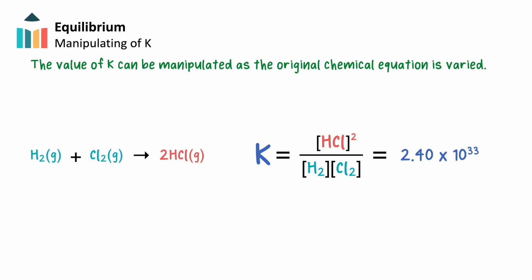Once the equilibrium constant value is known for a particular reaction at a particular temperature, the value of K can be manipulated as the original chemical equation is varied. For example, at 25 degrees Celsius, the production of hydrogen chloride from hydrogen gas and chlorine gas has an equilibrium constant of 2.40 times 10 to the 33rd. Since K is much greater than 1, we say this reaction lies further to the right at equilibrium, meaning there are far more products than reactants.